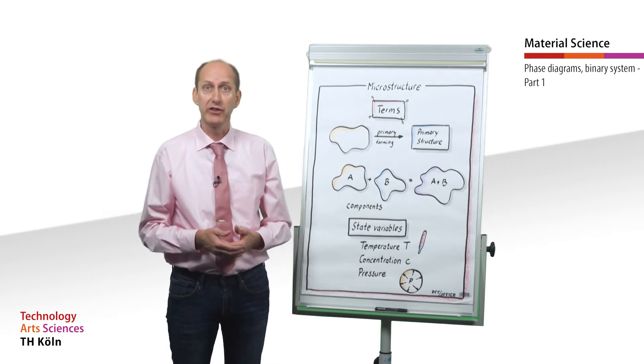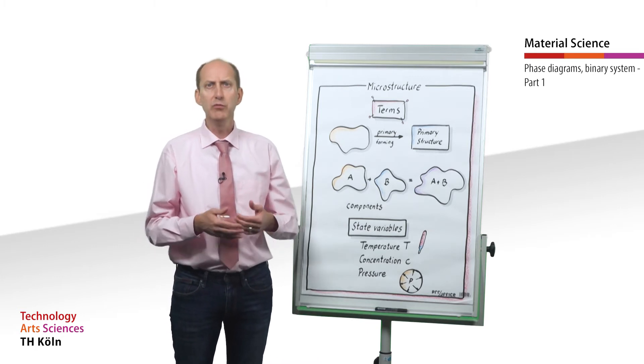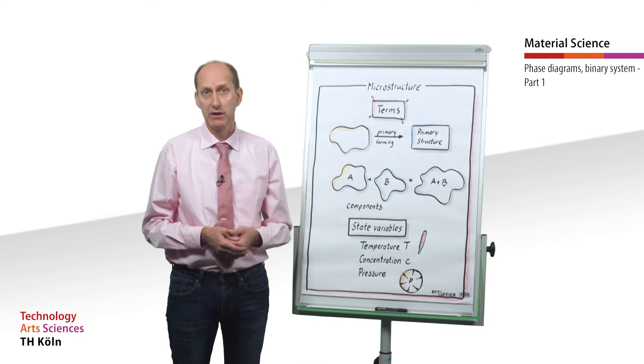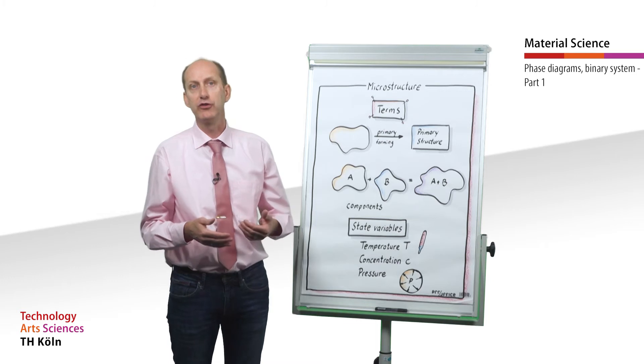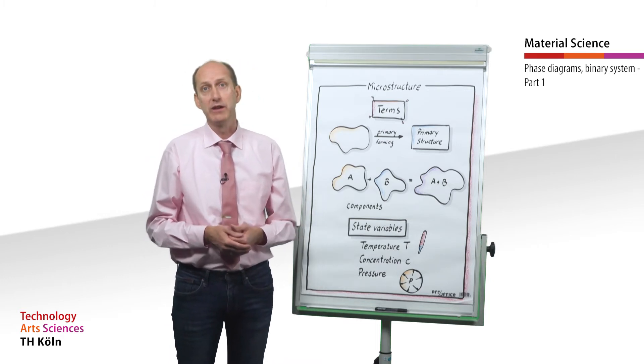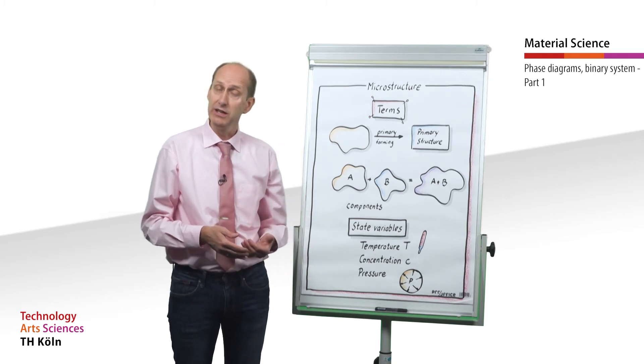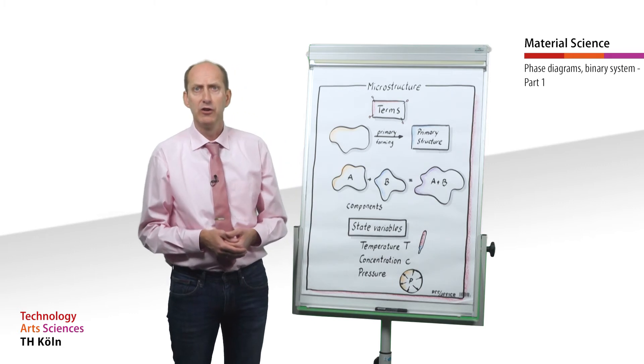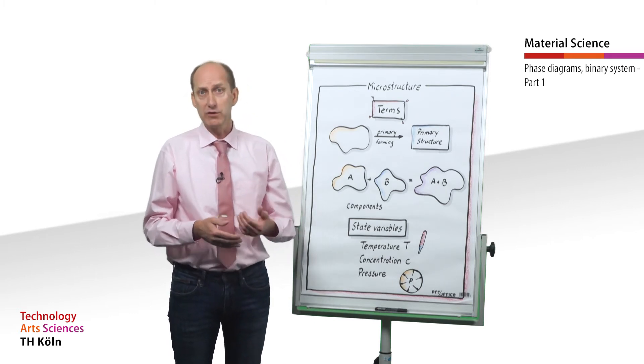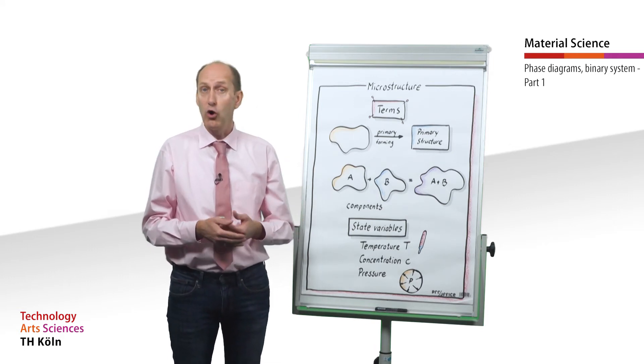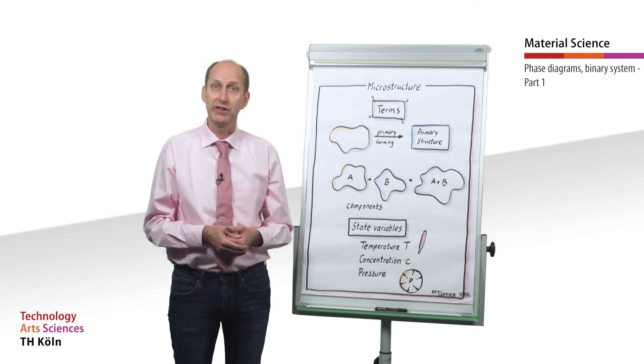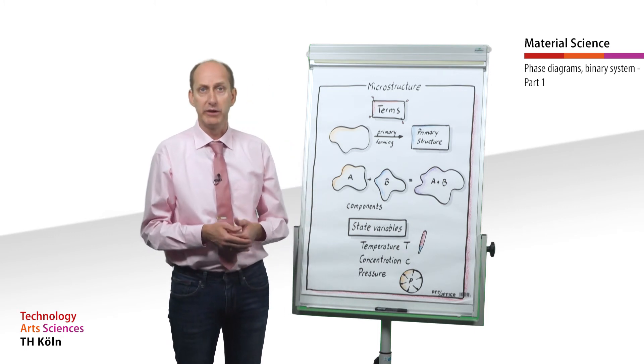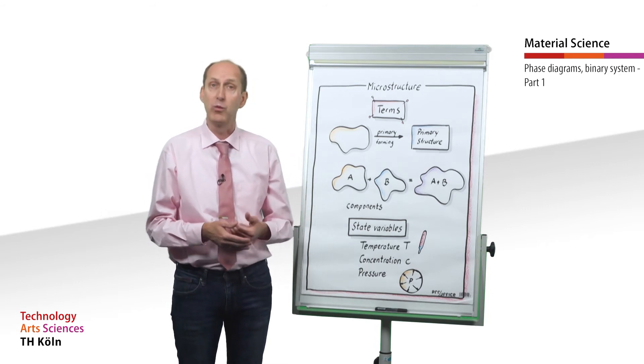If two metals or one metal and a non-metal are melted together, a two-component system is formed in a molten state. The source materials of this binary system are referred to as components. The state of alloys is determined by the state variables temperature T, concentration C, and pressure P. Most technical production and processing processes for materials are carried out at normal atmospheric pressure of one bar. Thus, every material state can be described by the two values of T and C.